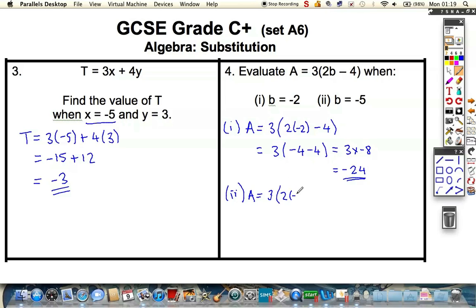Take away 4, which is this time, 2 times minus 5 is minus 10. Take away 4.